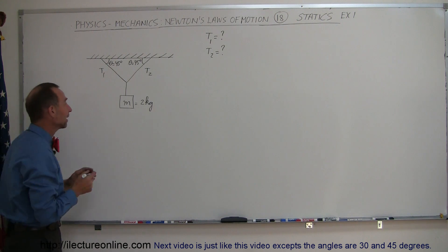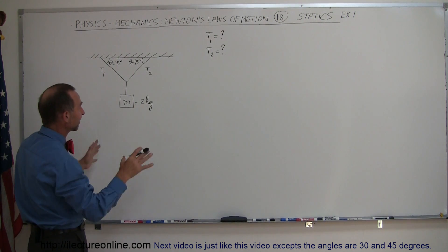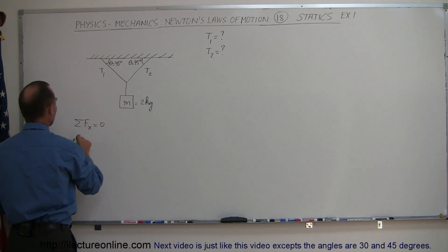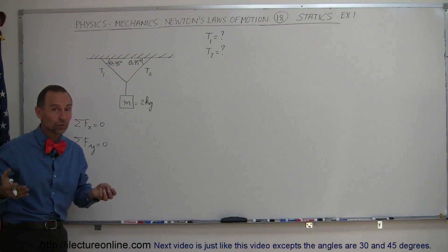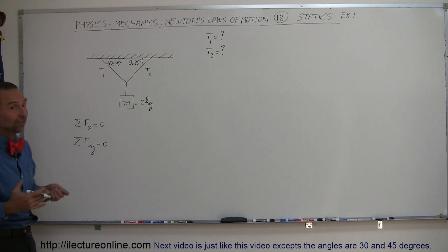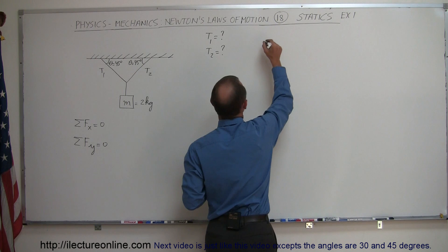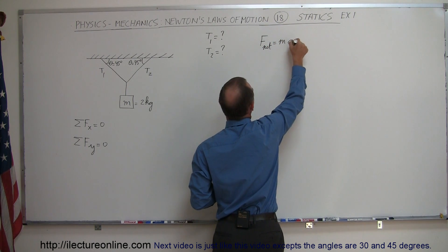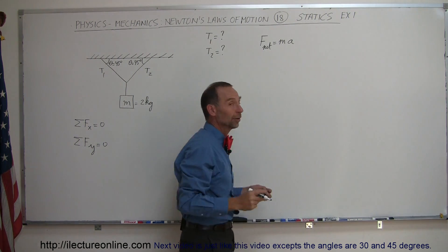The concept here is that if nothing is moving, nothing is accelerating, we can say that the sum of all forces in the x direction must add up to zero, and the sum of all forces in the y direction must add up to zero. That's a simple result of Newton's second law that says if nothing is accelerating, there must be zero net force, because F net equals mass times acceleration. If acceleration is zero, the net force must be zero.